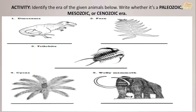Now let's proceed to the activity. Identify the era of the given animals below — write whether it's Paleozoic, Mesozoic, or Cenozoic era. The correct answers are: number 1, Mesozoic; number 2, Paleozoic; number 3, Paleozoic; number 4, Mesozoic; number 5, Cenozoic. Do you have the same answers? Good job, class!